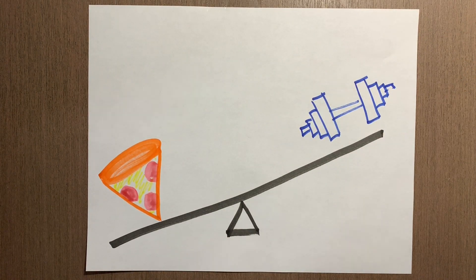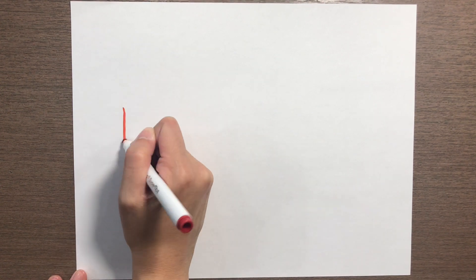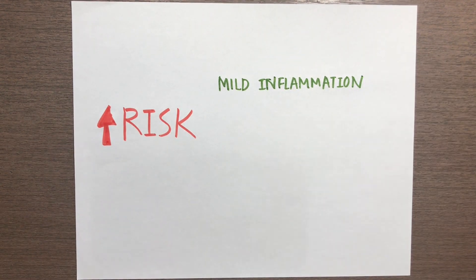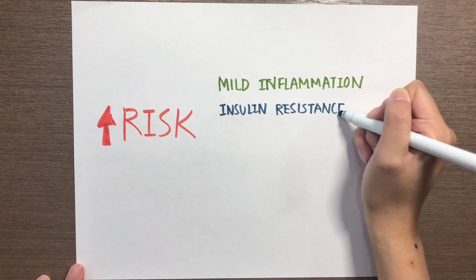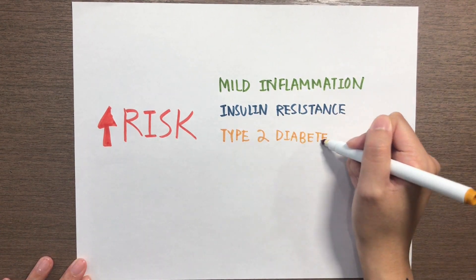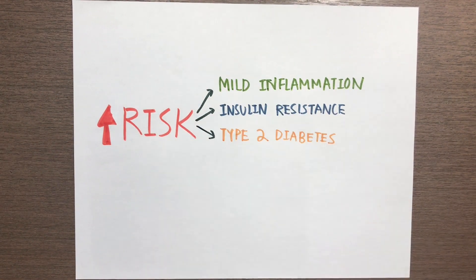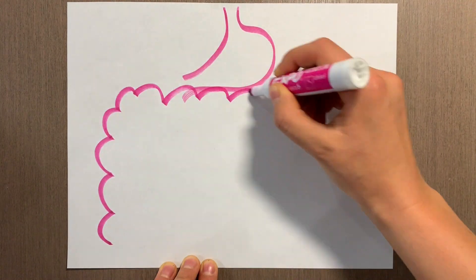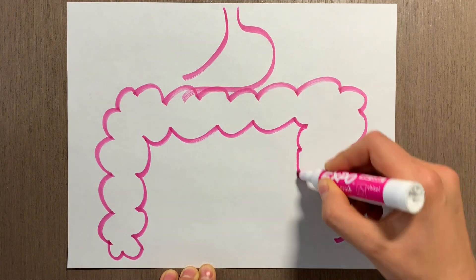Obesity can also predispose you to many other conditions such as chronic mild inflammation throughout the body, insulin resistance, and type 2 diabetes. On the other hand, the gut microbiota refers to the community of microorganisms